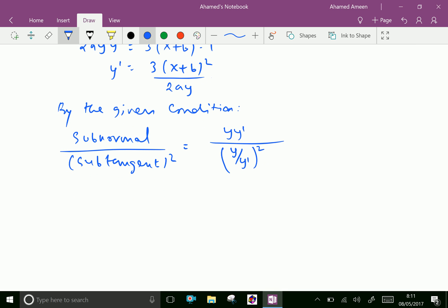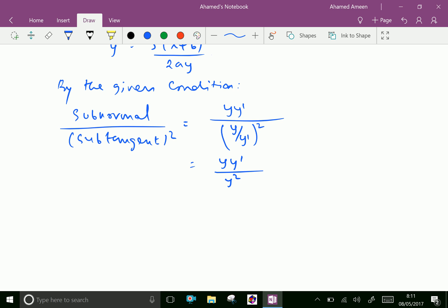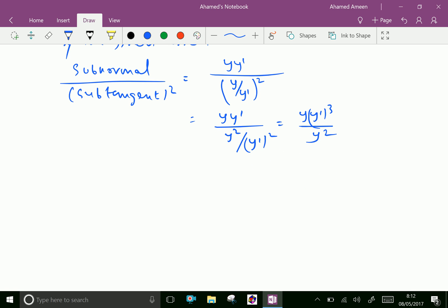This equals yy' over (y²/y'²), which equals yy'³/y². We can simplify further as y'³/y, or write as (1/y)·(y'³).